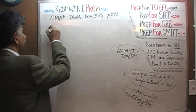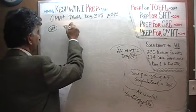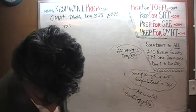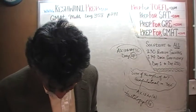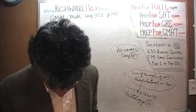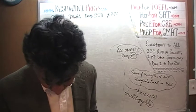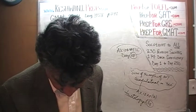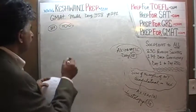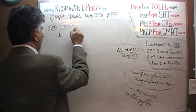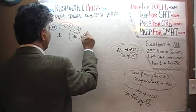Problem number 169 tells us that N is a positive integer. The question is: is 1 over 10 raised to N less than 0.01?